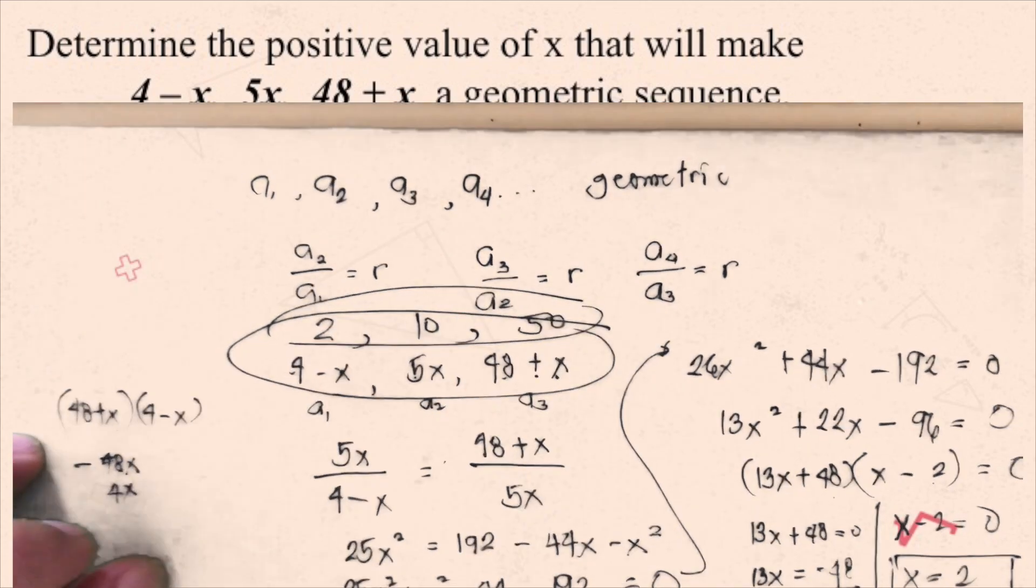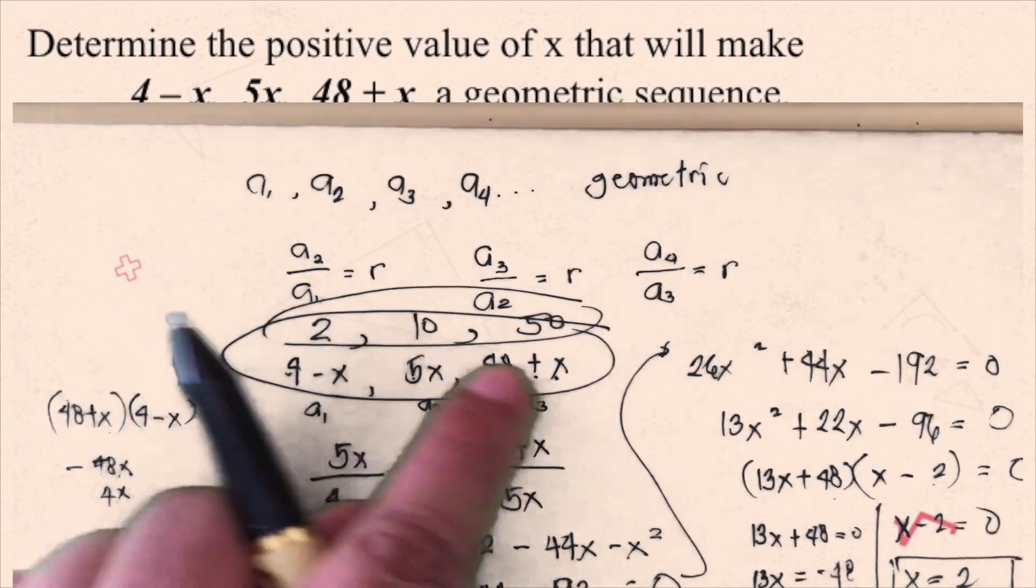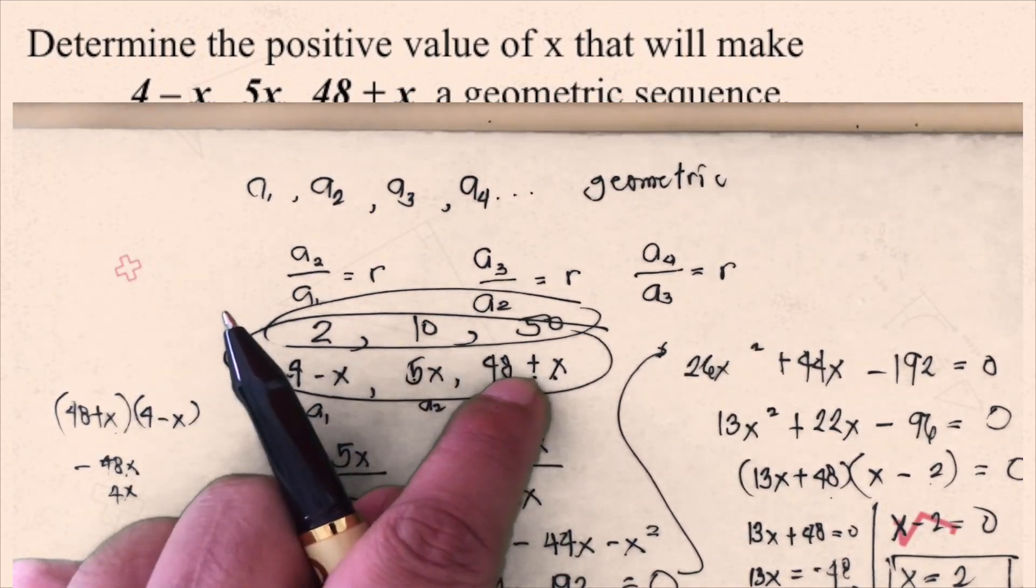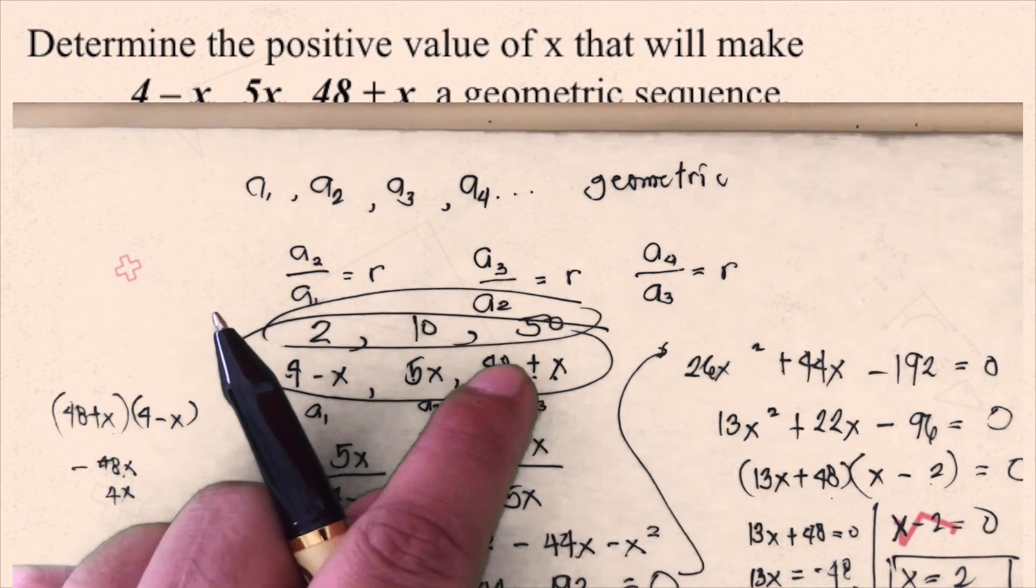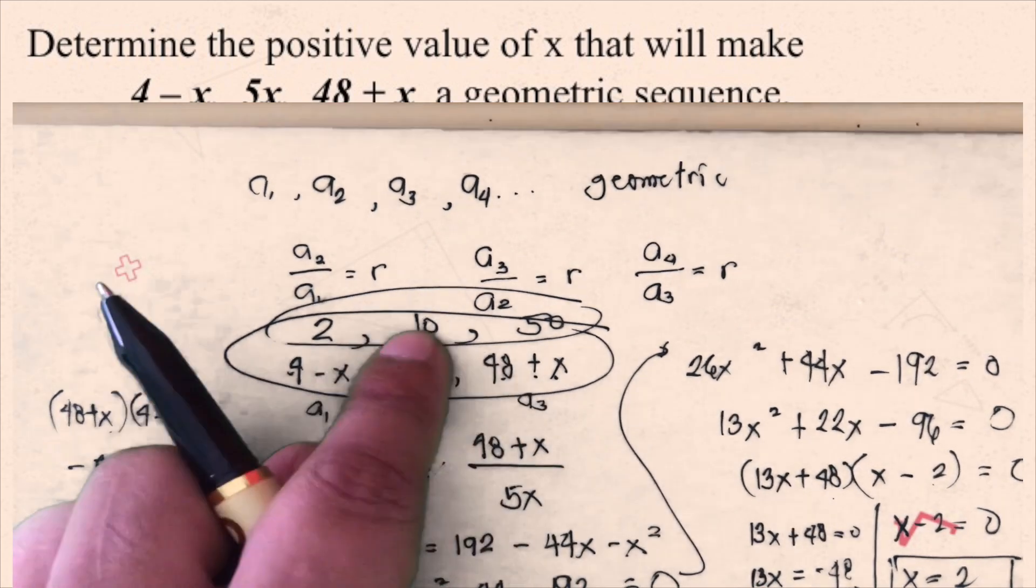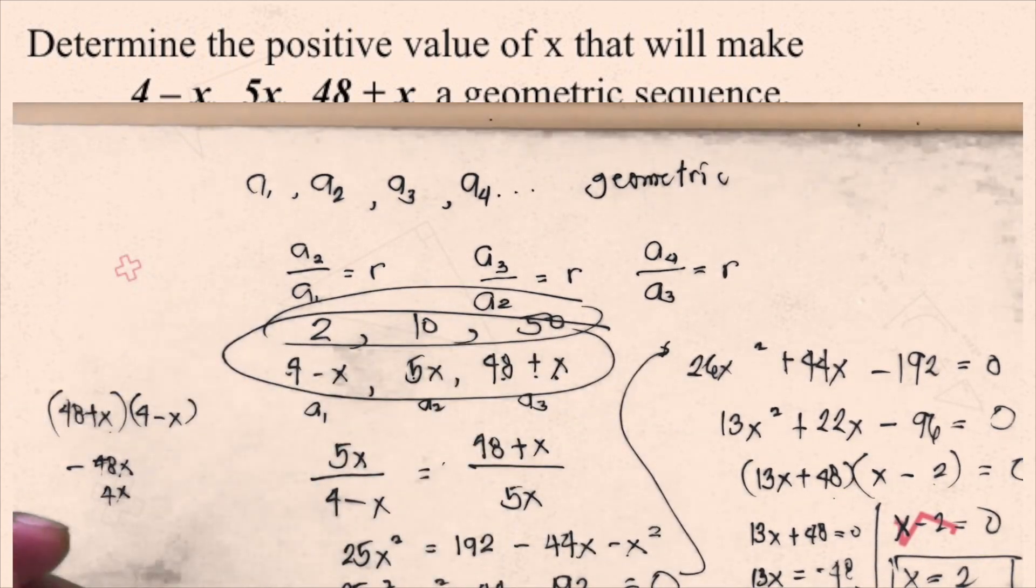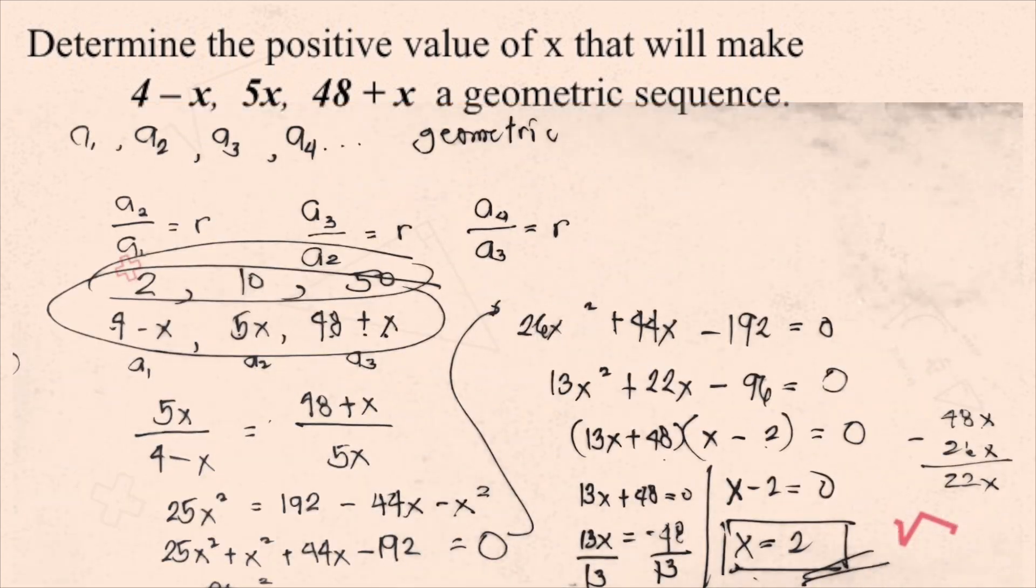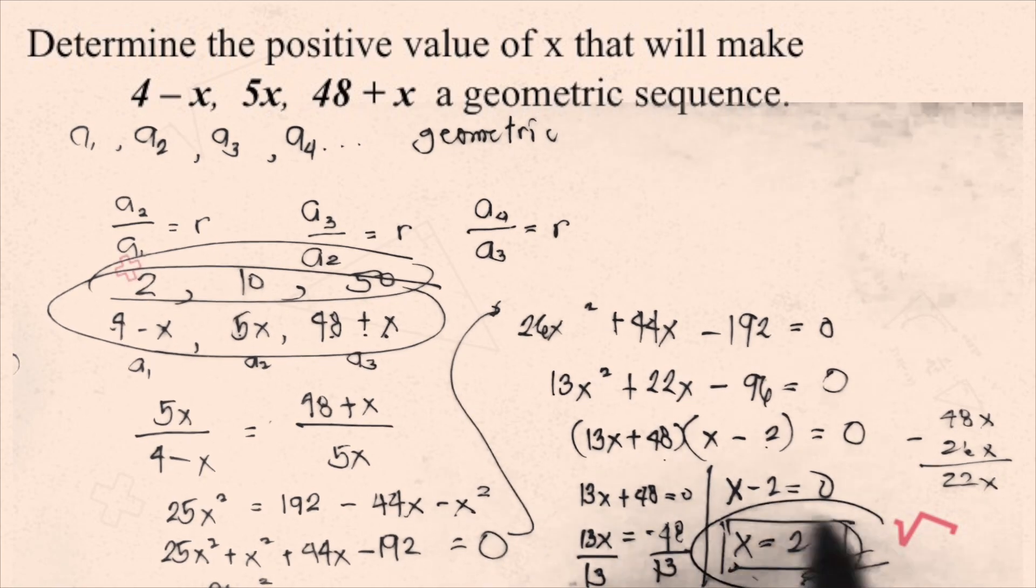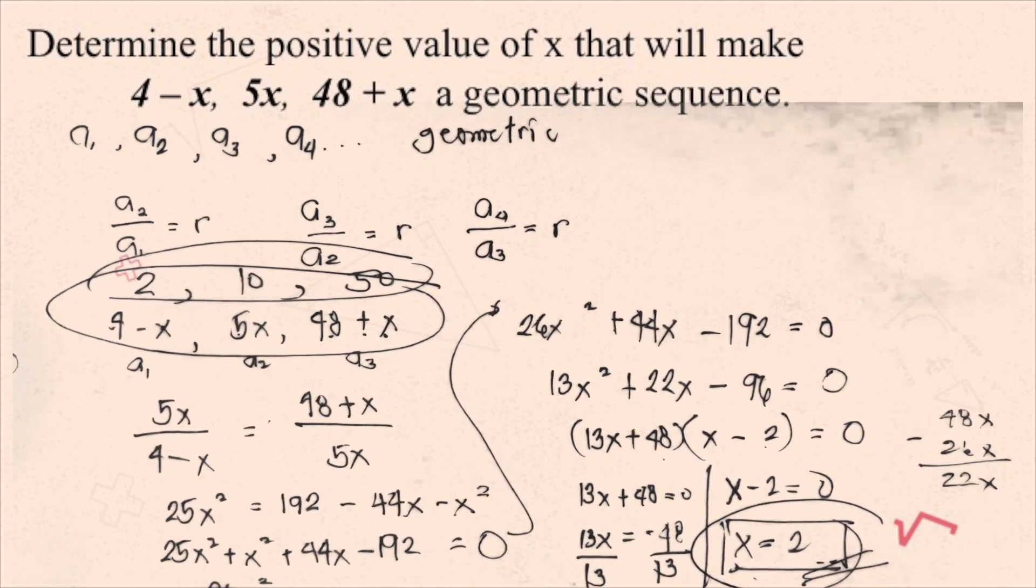Okay, and obviously, 2, 10, and 50 are geometric means because they have a common ratio. 10 divided by 2 is 5. 50 divided by 10 is 5. So, therefore, our answer is correct. x equals 2.